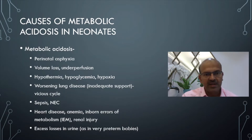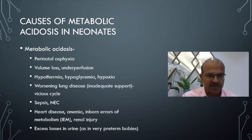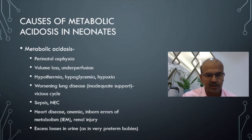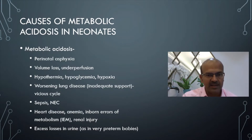Hypothermia, hypoglycemia, and hypoxia are all associated with acidosis if they are severe. As mentioned previously, worsening lung disease with inadequate support can lead to increased work of breathing, reduced oxygen perfusion to the tissues, and lactate increase causing a vicious cycle. It is usually mixed acidosis in severe respiratory distress.